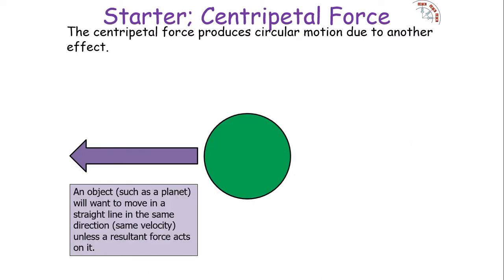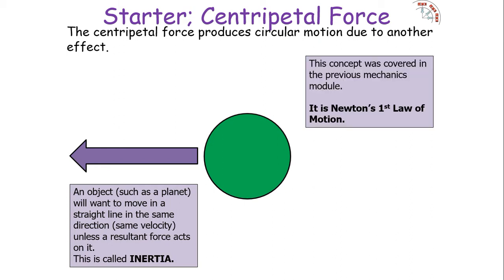You might think: why does it move in a circle if the resultant force is acting in a straight line towards the centre of the orbit? Wouldn't it make more sense for the orbiting body to go straight to the centre of that gravitational field? Well, the centripetal force produces circular motion because it works in tandem with another effect. Any object — such as a planet or satellite — will want to move in a straight line in the same direction; it wants to maintain the same velocity unless a resultant force acts on it. We call that principle inertia.